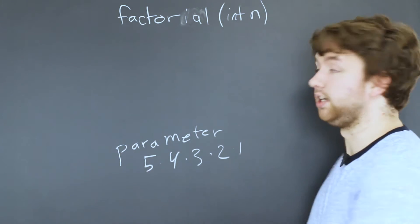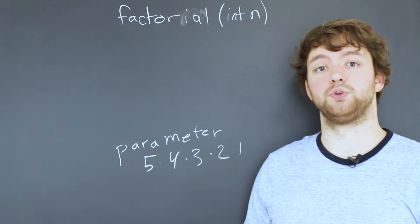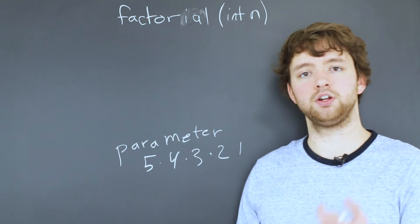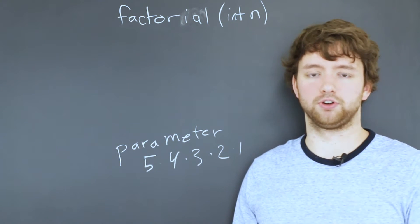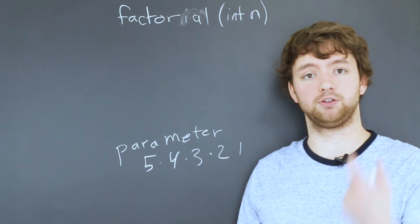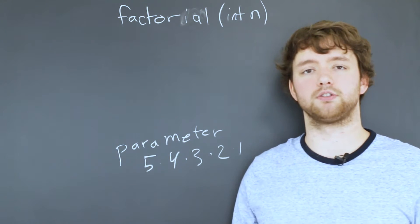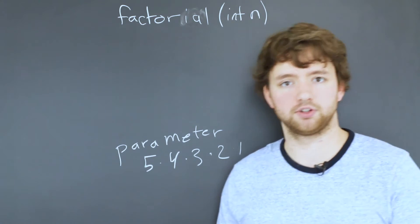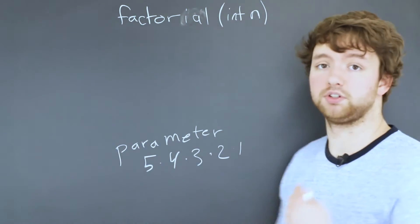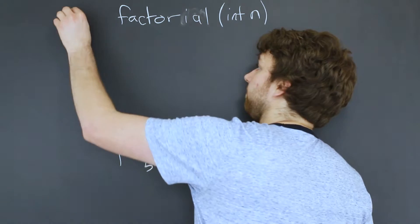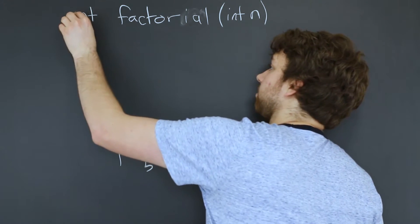That is going to be an integer. Okay because when we multiply integers together the result is always an integer. That's a concept in math known as closure. The integers are closed in multiplication. So the return type is going to be an integer. And you put that out here. So you say int factorial.